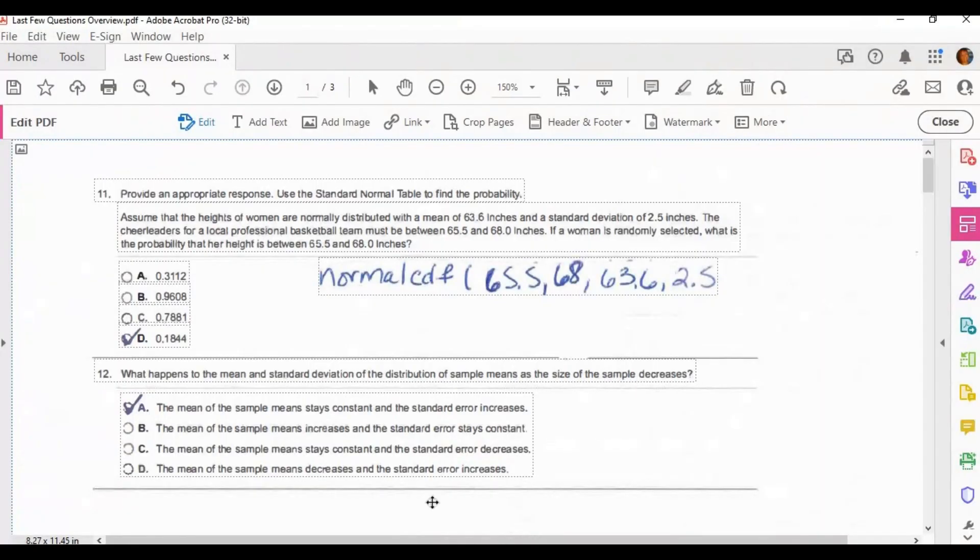So the overall effect of the sample size decreasing is that there's an increase in the standard error of the mean. So if we look back at this question, what happens to the mean and standard deviation of the distribution of sample means as the size of the sample decreases? The answer is A. The mean of the sample mean stays constant, that's because it doesn't affect that formula, and the standard error increases. That was our answer.